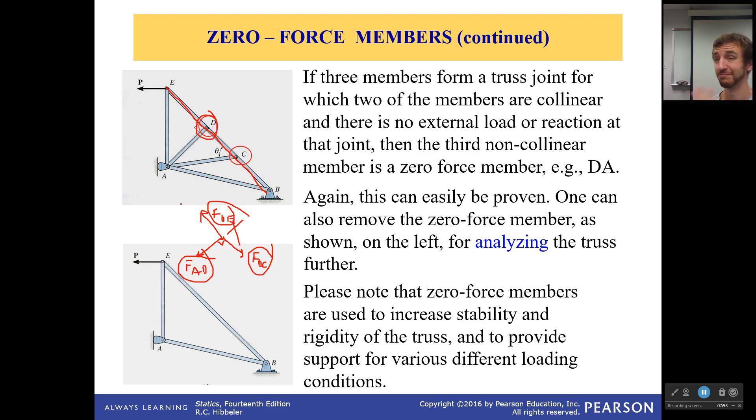With that in mind, we realize that AD must be zero. And we can get rid of this member if we want to. Now, in real life, these are used for rigidity and for stability. Because in real life, things can bend. Here in our problems, they can't. So zero force members are helpful. And this is one of those great situations where you can see it fairly easily. It's a member that is perpendicular to two collinear members.